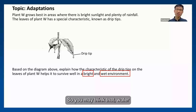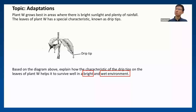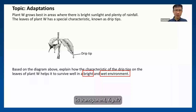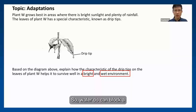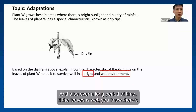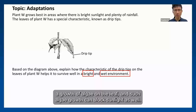You may think that water is transparent, so why would it block sunlight? But if you look at the sea, deep sea is actually very, very dark. So water does block a little bit of light. And also over a long period of time, if the leaf is wet, it can promote growth of algae on the leaf. And such algae growth can block sunlight as well.